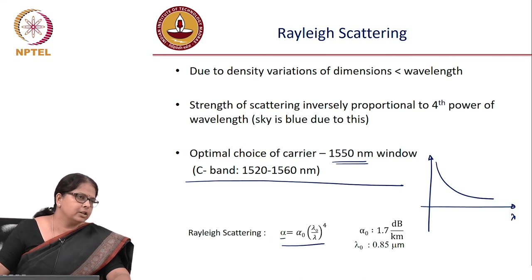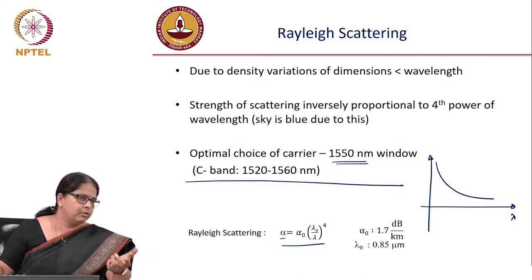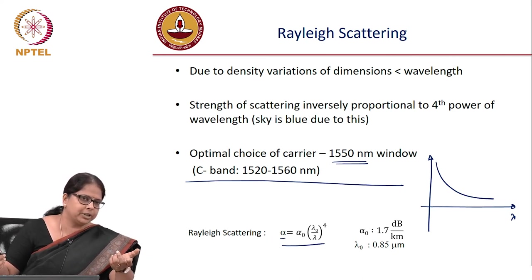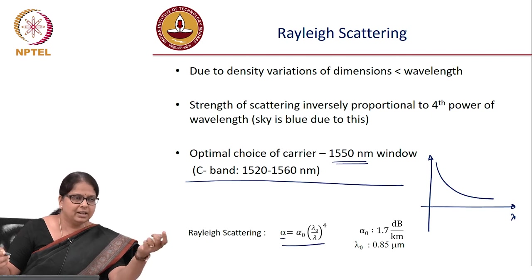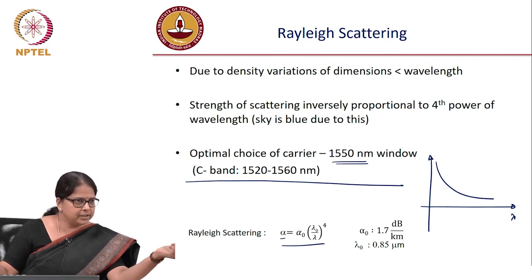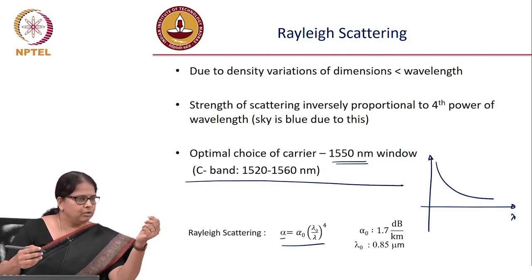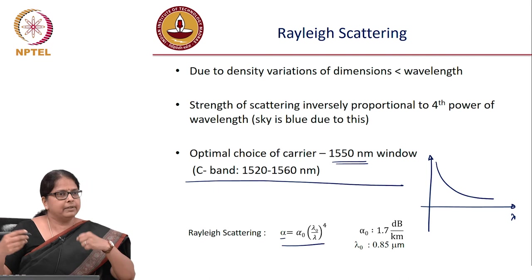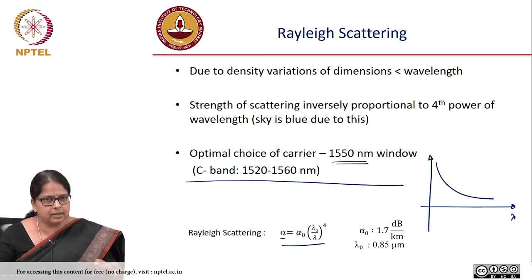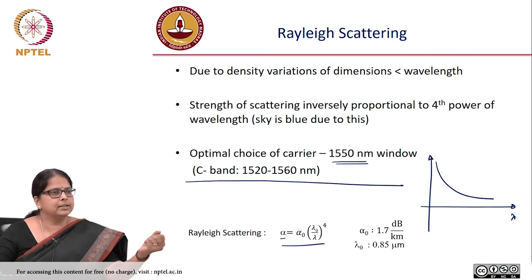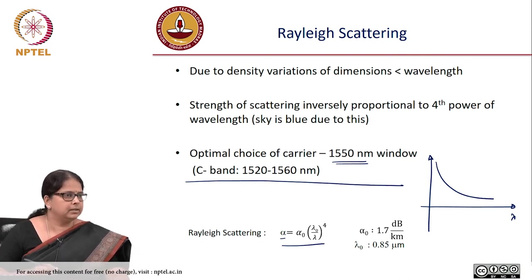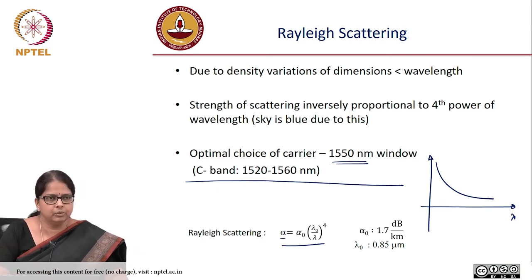This empirical relation is very useful in practice: if you measure fiber loss at one wavelength, say 1550 nm, and later want to know the loss at a different wavelength, the relation α = α₀(λ₀/λ)⁴ lets you calculate it directly.